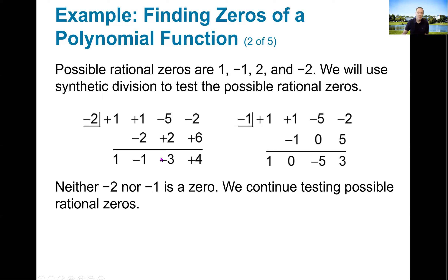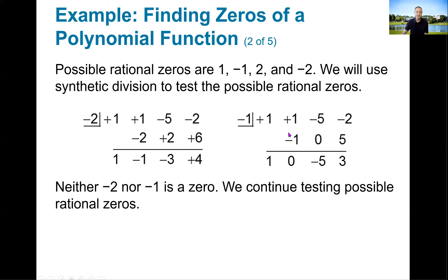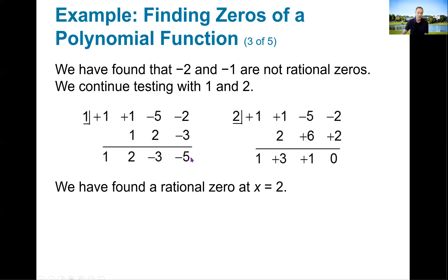Whether you use synthetic division or your calculator, you can quickly see that negative 2 and negative 1 are not zeros. So I move to the positive ones — what about 1 and 2? When I try to use synthetic division with 1, I get a remainder of negative 5, which tells me 1 is not a zero either. So there's only one possible rational zero left: 2. And if you're unlucky like I was, it's the very last one you try — after doing three synthetic division problems that showed those terms are not factors. Finally, I get a zero remainder, so I know I have a rational zero at x = 2.